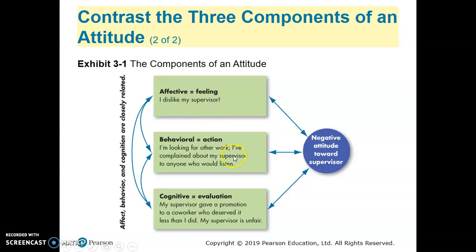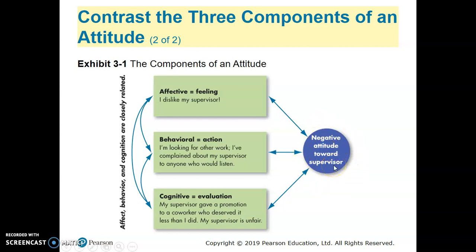Affective is related to our feeling, behavioral is related to our actions, and cognitive is related to our evaluations of our actions. These three things — affective, behavioral, and cognitive — will cause our attitudes to be either positive or negative towards something. For example, our attitude towards a supervisor is based on our affective, behavioral, and cognitive components.